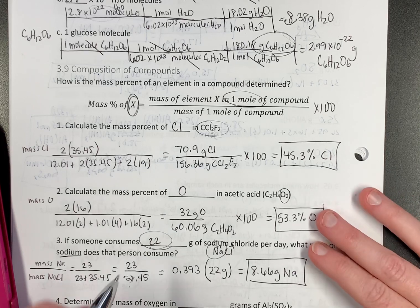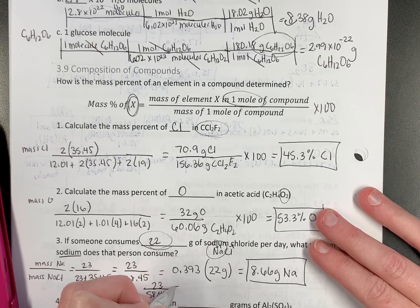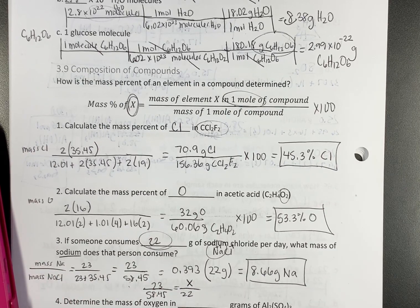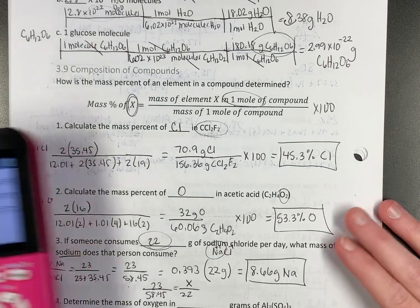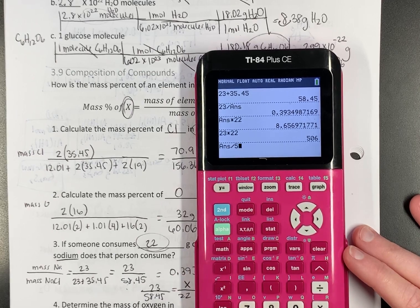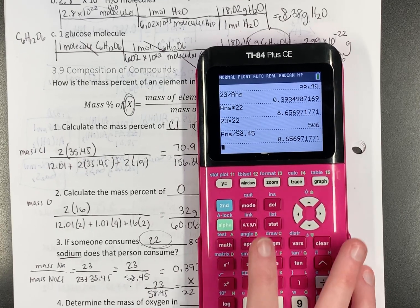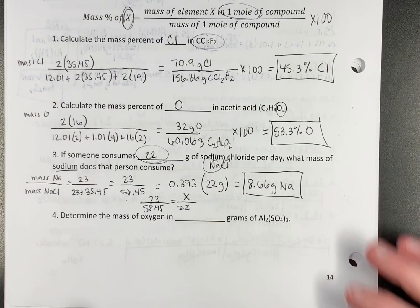You can also solve it this way if you like proportions. If you don't like proportions, don't write this down. You would set up your 23 over 58.45 just the same equals x over 22. Solve the proportion. Anybody prefer to do it that way? No? Okay, don't do it that way. If you like it, great. If you don't, you're going to get the same answer. Because you would do your cross multiply, 23 times 22, divided by 58.45. You're going to get the same answer.